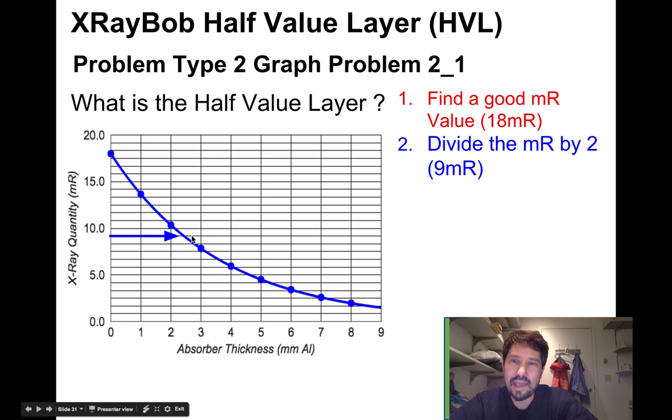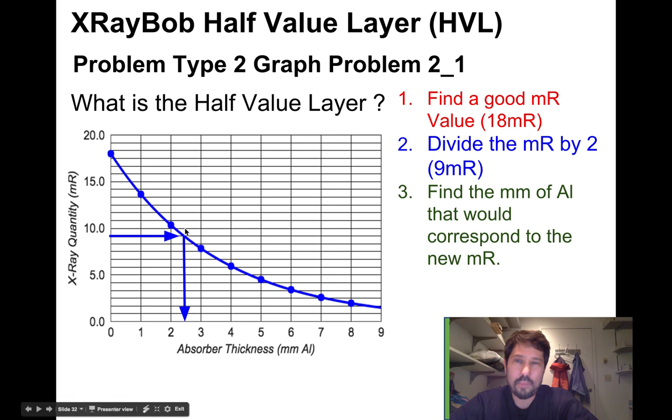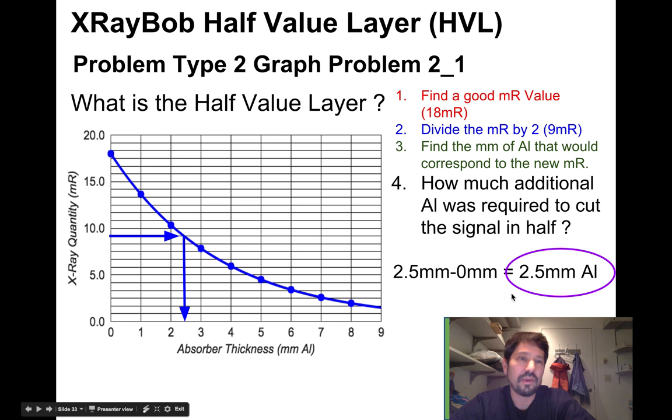We can cut that in half and say, it dropped 50%. It dropped to nine. And that point is pointing to 2.5 millimeters of aluminum. And it started with zero. So 2.5 millimeters minus zero gives me my two and a half millimeters of aluminum is a half value layer as calculated from this graph.